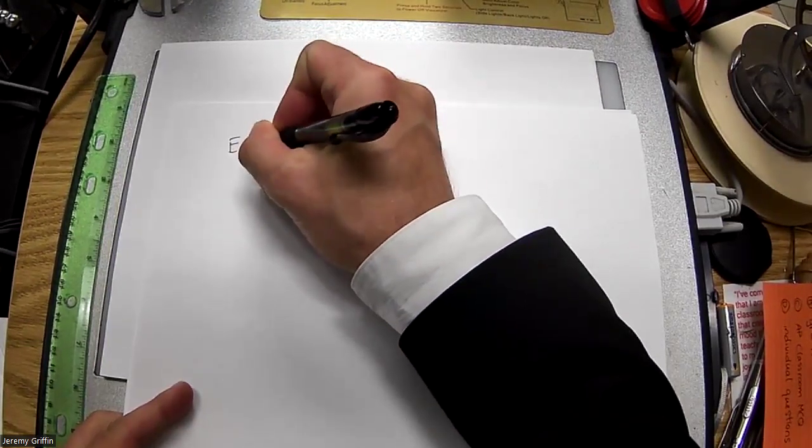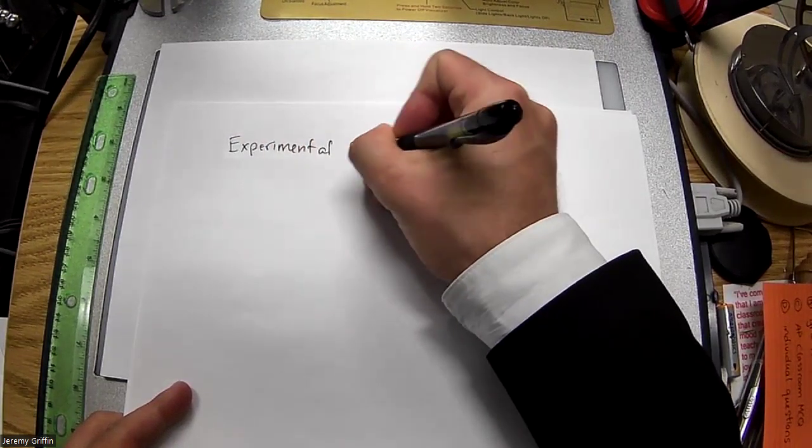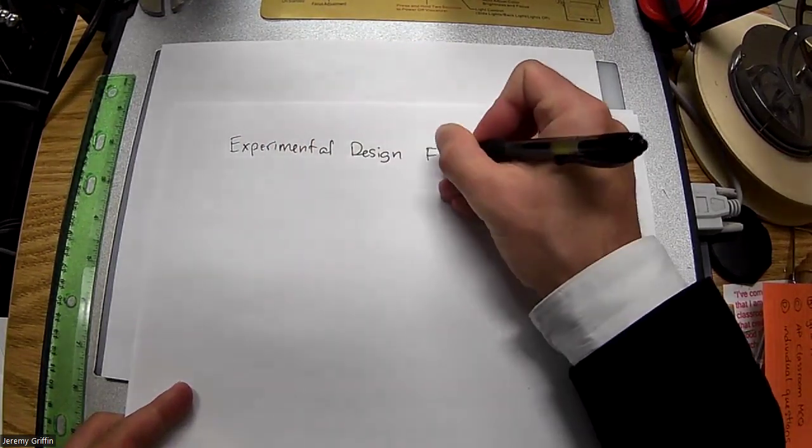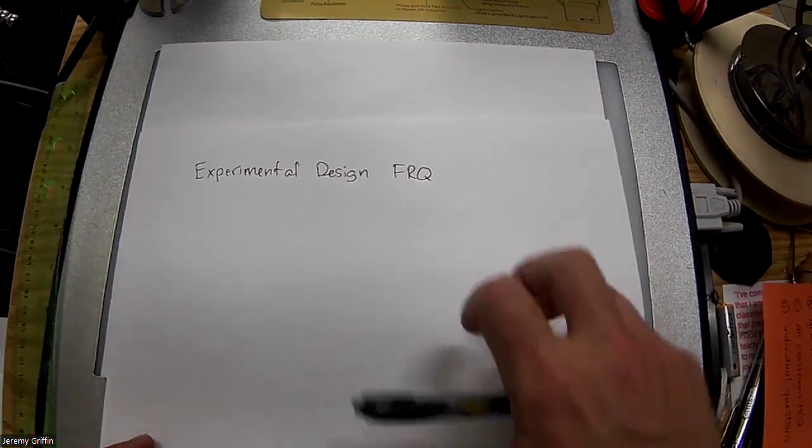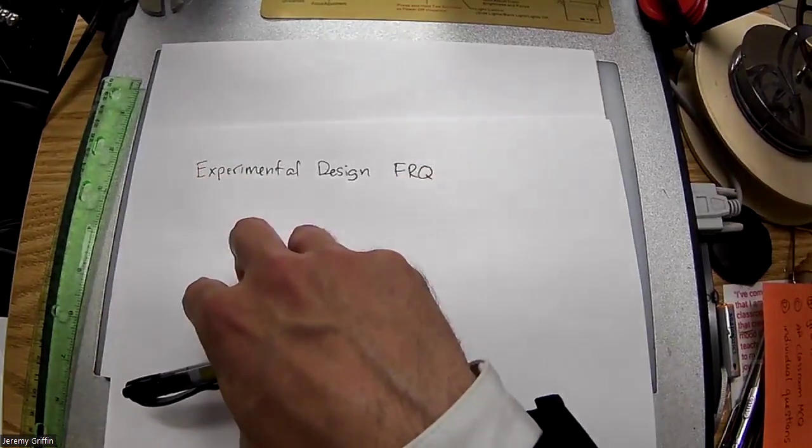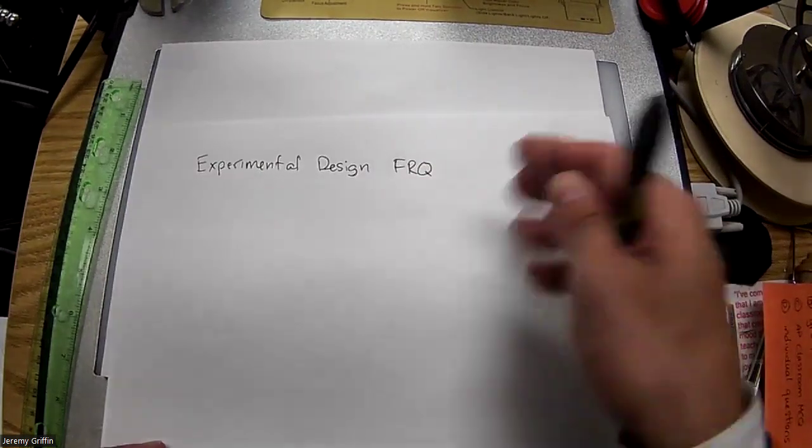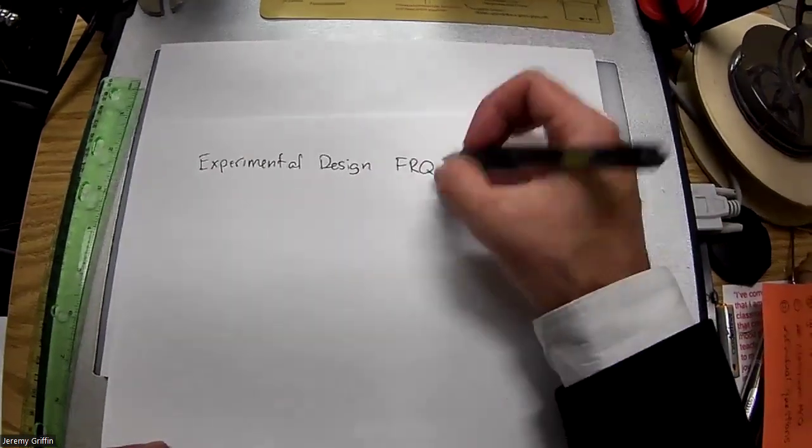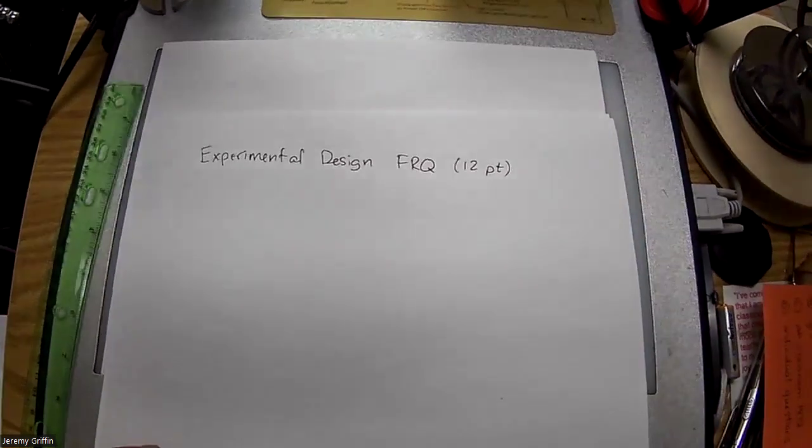So experimental design. This is going to be one of your five free response questions. The format of the exam is 90 minutes for 50 multiple choice questions, and then 90 minutes to do five free response questions. One of them is going to be experimental design, and it's going to be a 12-point question, so one of the big ones.